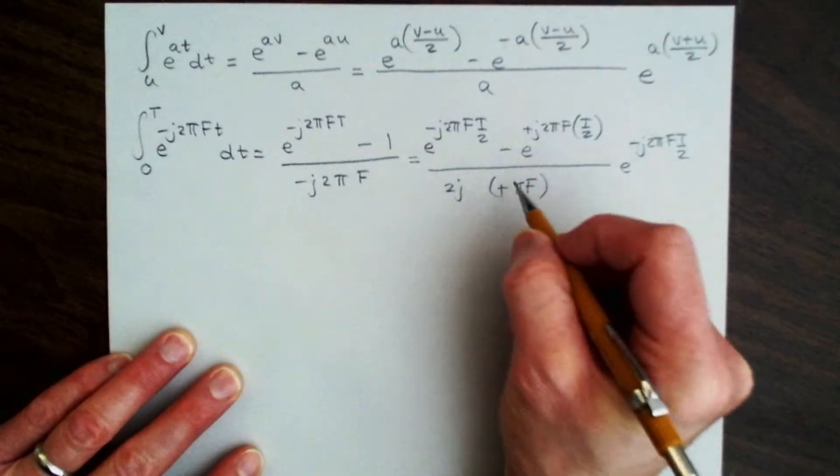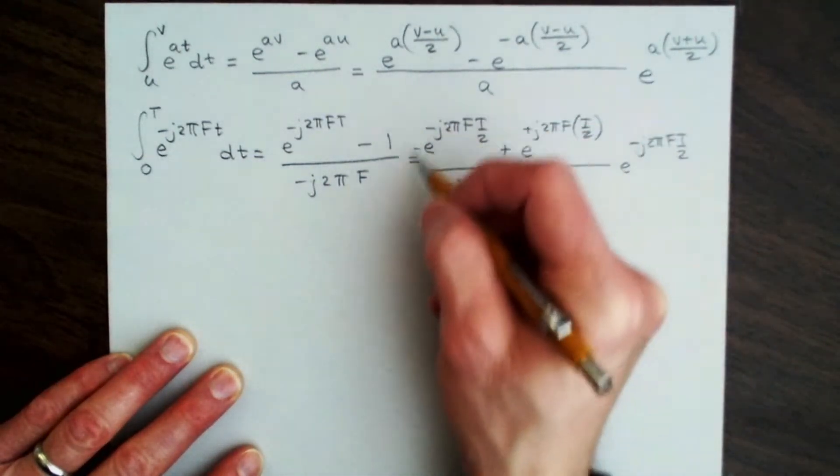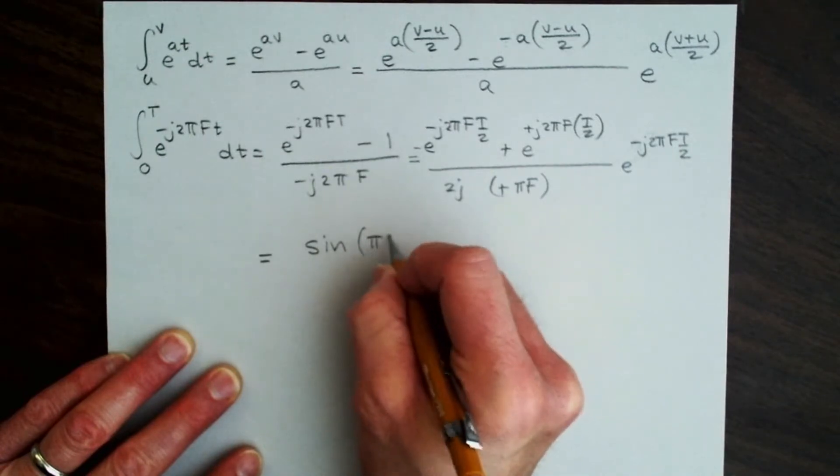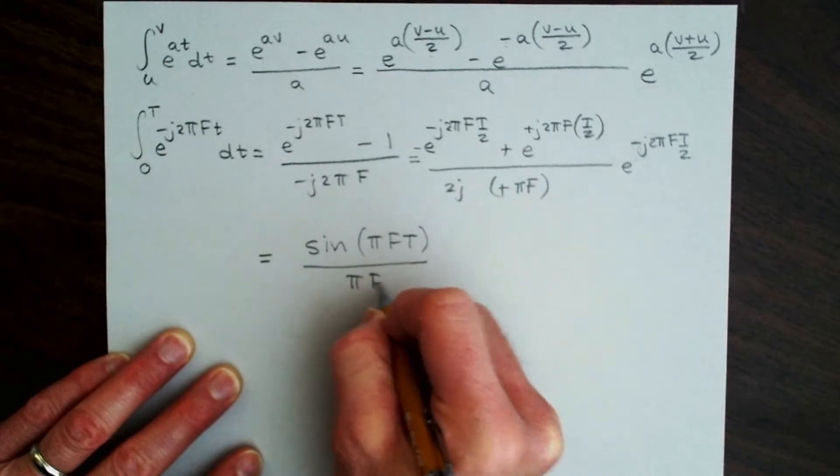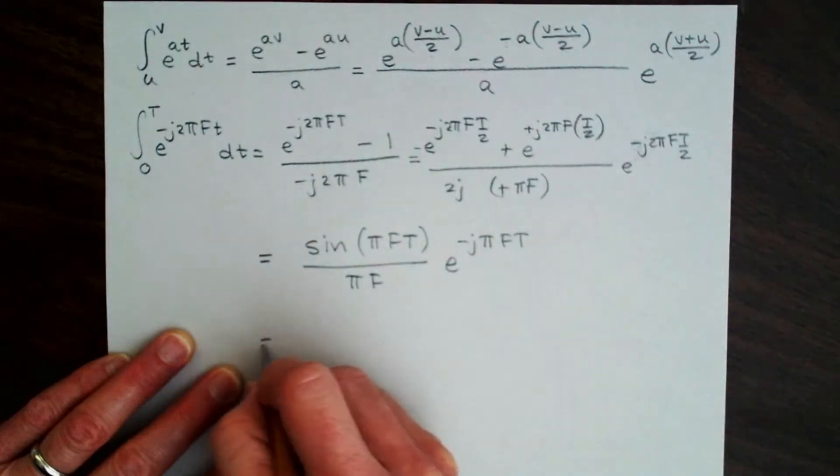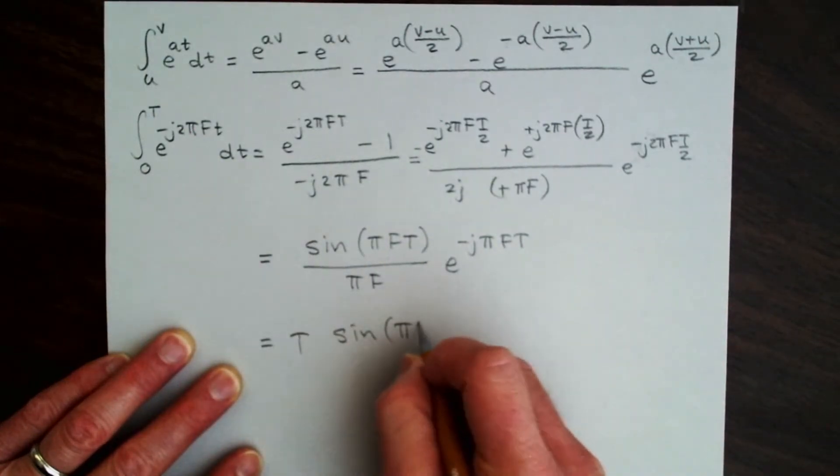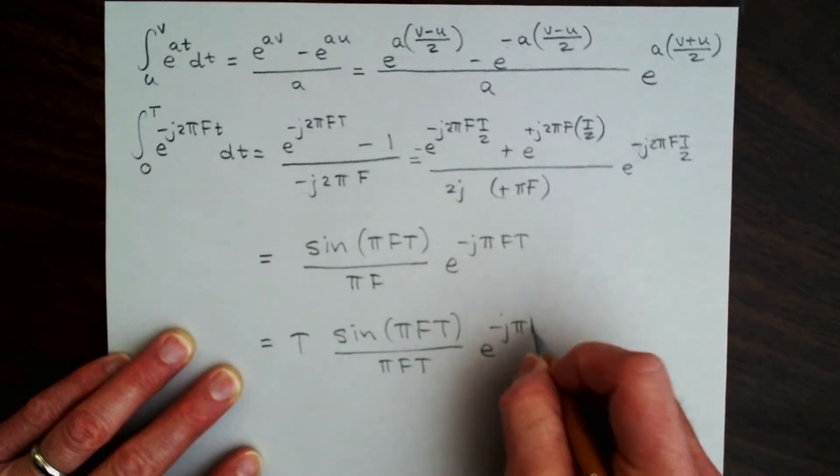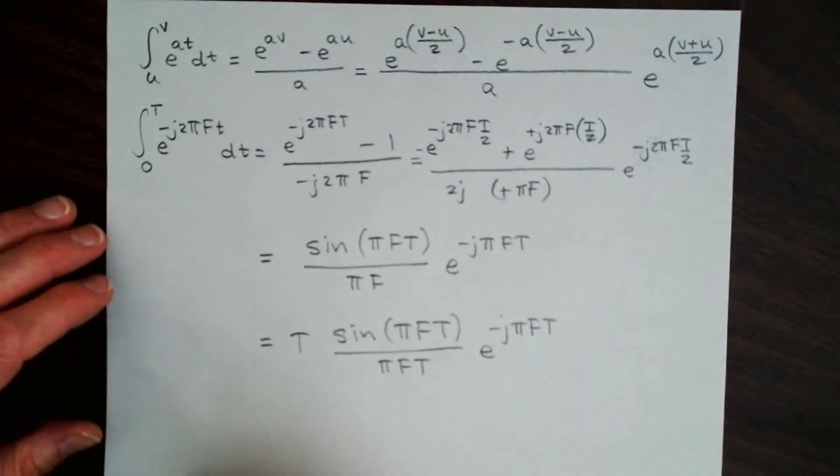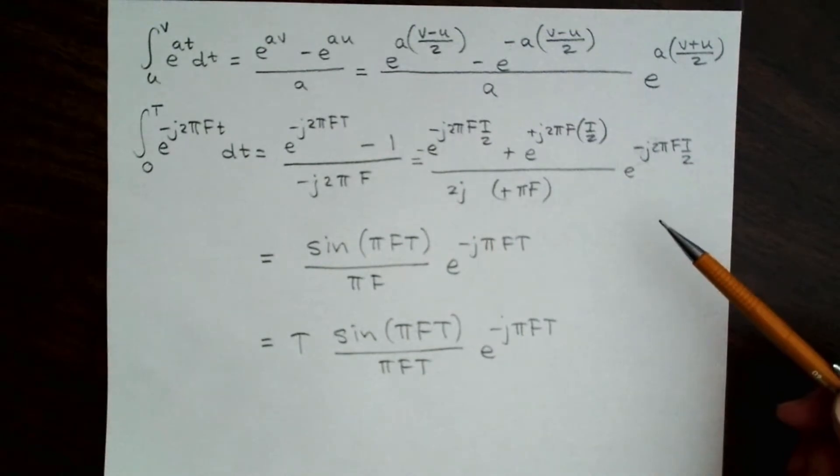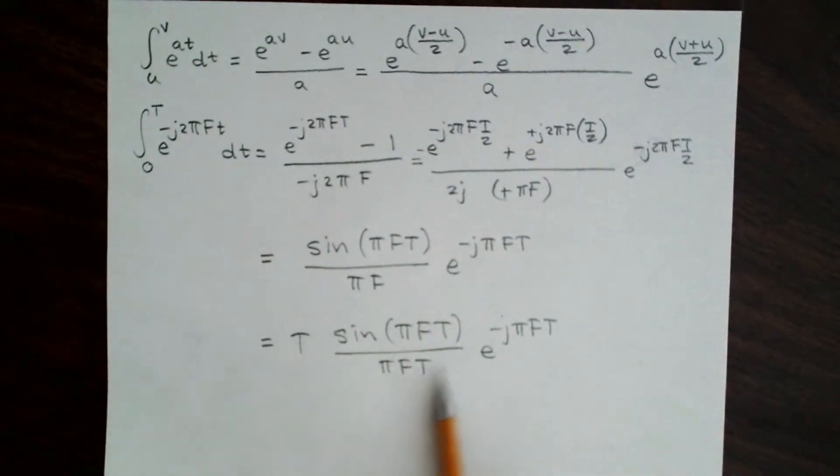Well, we can see again, I'm going to change the signs. We can see the sinc function sitting right here. So let's write this out. So now I'll have sine π f T divided by π f, times e to the minus j π f T. We can write that one more time: T times sine π f T divided by π f T, times e to the minus j π f T. So in this case, we started with a non-symmetric interval and used this factorization of the exponents to get back to the point where we could recover the sinc function, which is often useful in applications.